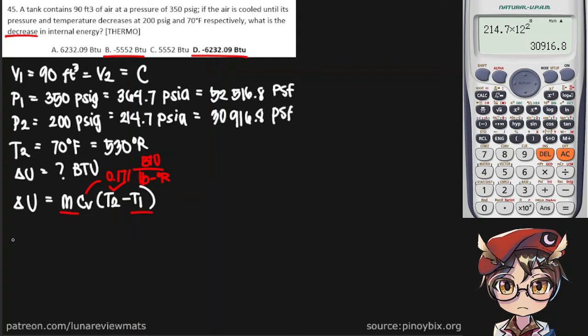To find the mass, we're going to use the ideal gas law on the final state of this system. So P2 V2 is equal to m times the gas constant of air times T2. We have our P2 right here. V2 is the same as V1. Looking for mass.